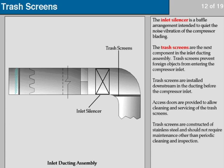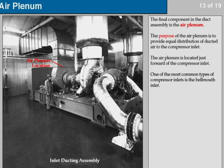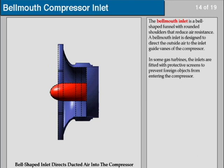Trash screens are constructed of stainless steel and should not require maintenance other than periodic cleaning and inspection. The final component in the duct assembly is the air plenum. The purpose of the air plenum is to provide equal distribution of duct air to the compressor inlet and is located just forward of the compressor inlet. One of the most common types of compressor inlets is the bellmouth inlet, which is a bell-shaped funnel with rounded shoulders that reduce air resistance. A bellmouth inlet is designed to direct the outside air to the inlet guide vanes of the compressor. In some gas turbines, the inlets are fitted with protective screens to prevent foreign objects from entering the compressor.